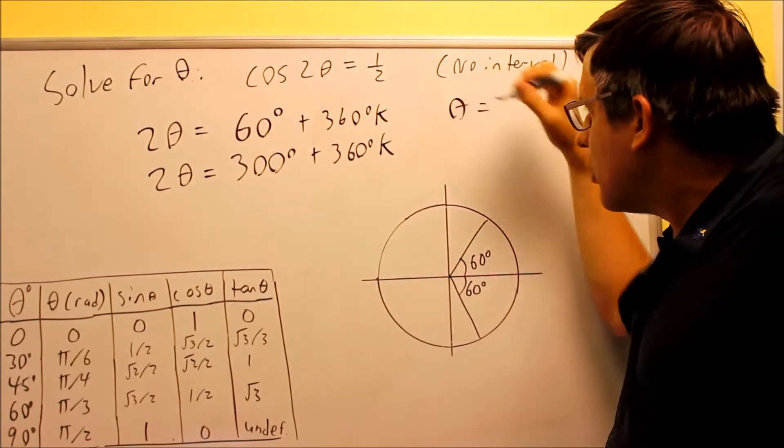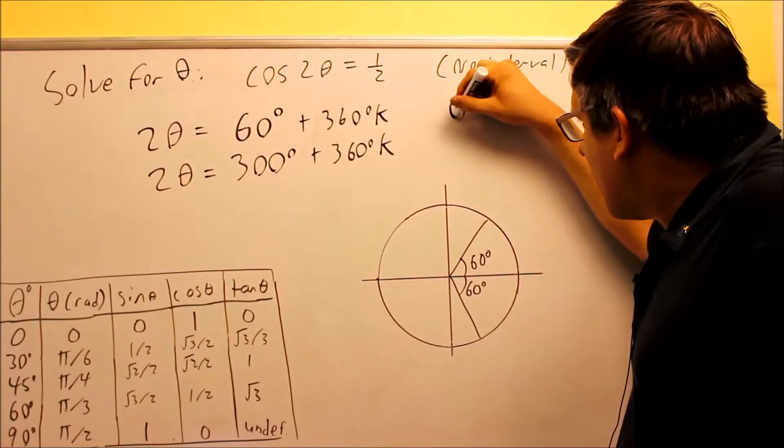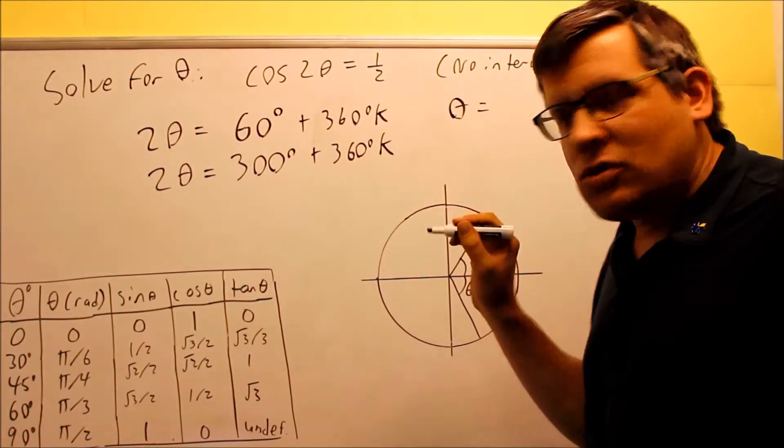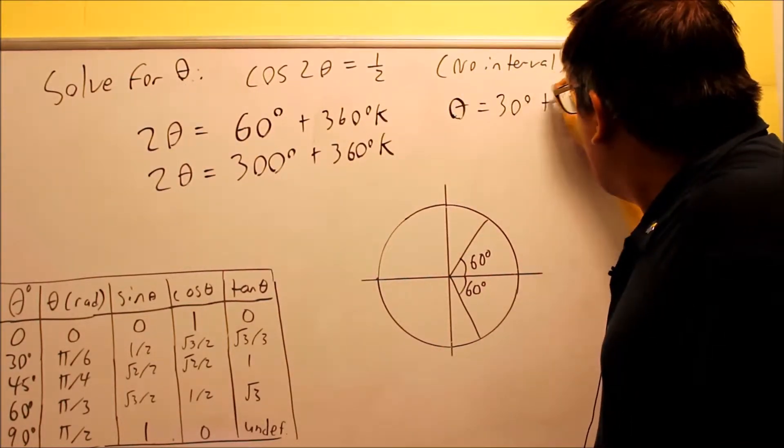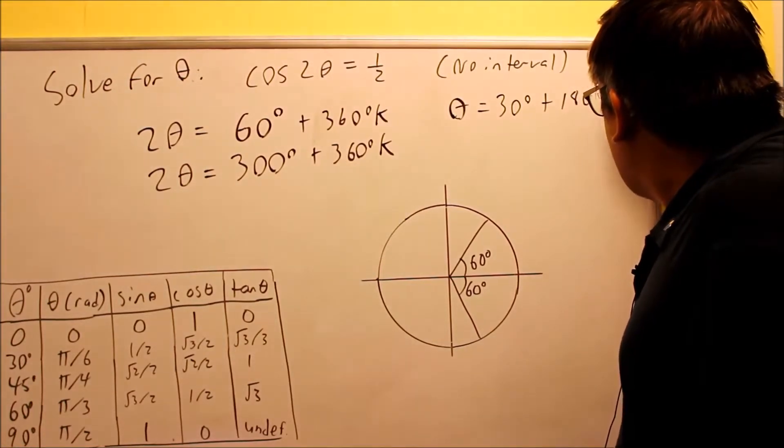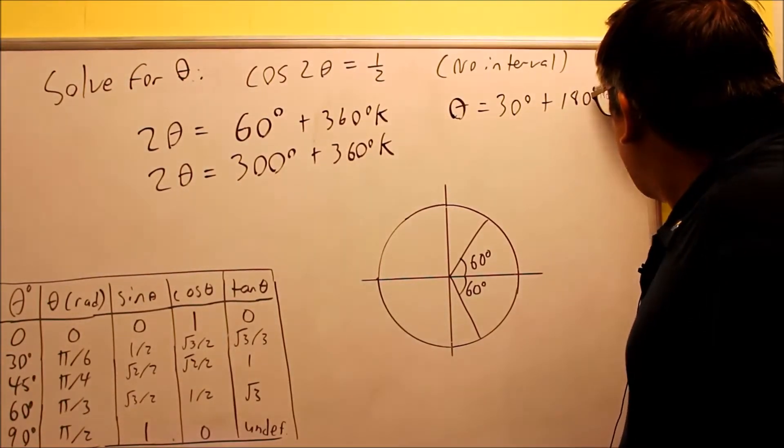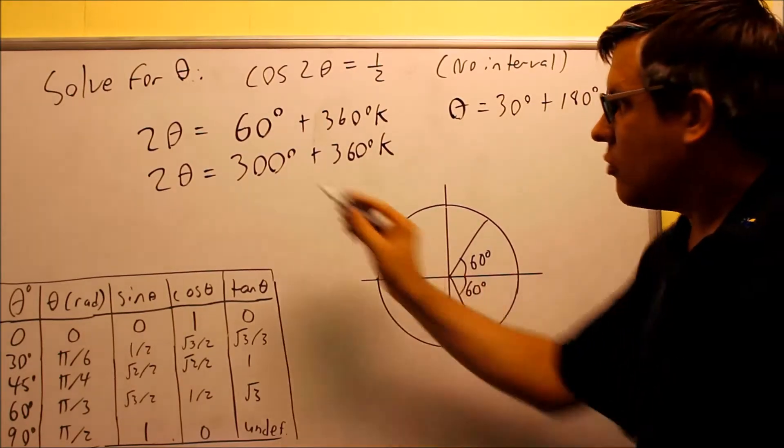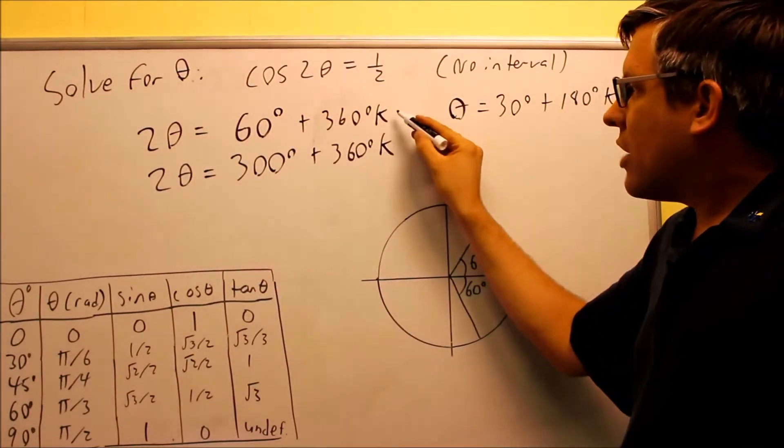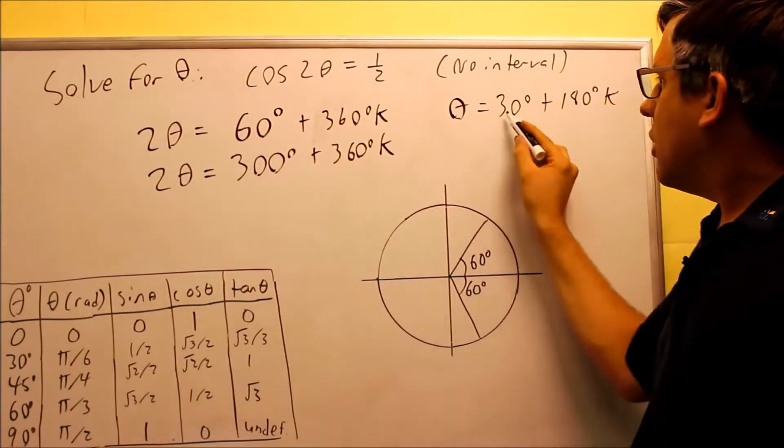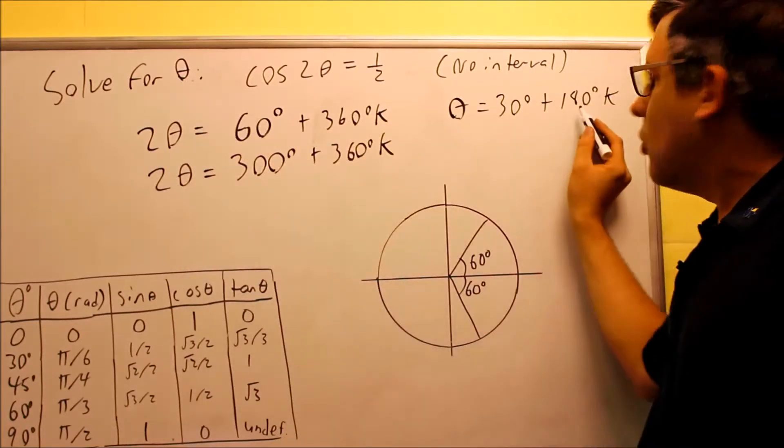Now, everything here has to be divided by 2, so we get 30 degrees plus 180k. Okay, so that right there is the answer to the question. We divide everything through by 2. 60 divided by 2, you get 30. 360 divided by 2, 180.